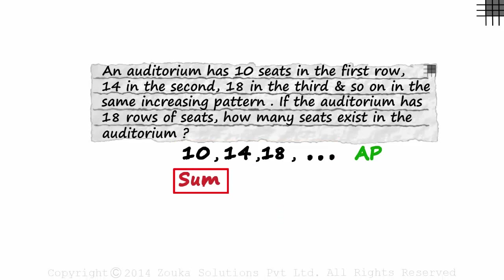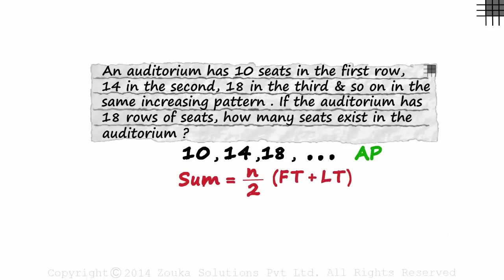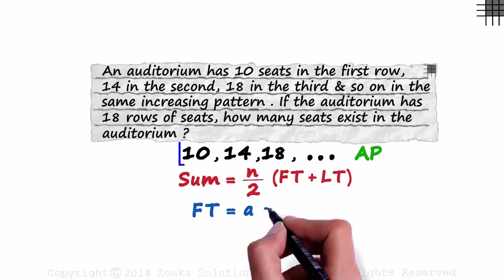What is the sum of the terms of an AP? It will be N over 2 multiplied by first term plus the last term. Here N will be the last term number. What is the first term? We call it A and here it's 10.